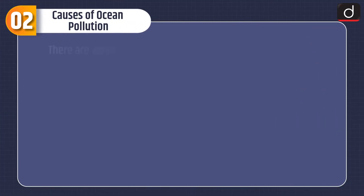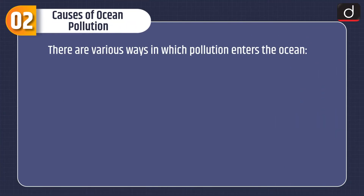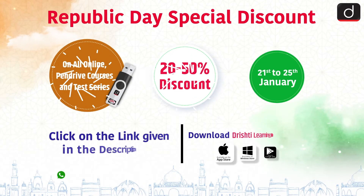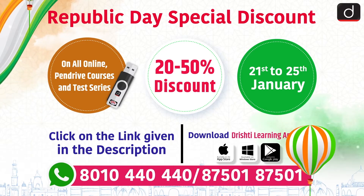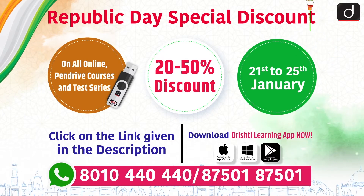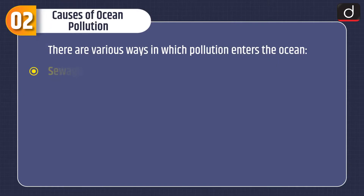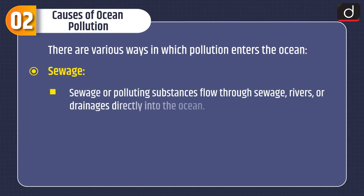Moving on to causes of ocean pollution — there are various ways in which pollution enters the ocean. First is sewage. Sewage or polluting substances flow through sewage, rivers, or drainages directly into the ocean.